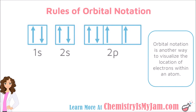Each of the arrows on the screen represents an electron, and each of the boxes represents an orbital. Someone could quickly glance at this diagram and tell that there were two electrons in the 1s sublevel for oxygen. They could also see that there were four electrons in the 2p sublevel for oxygen.